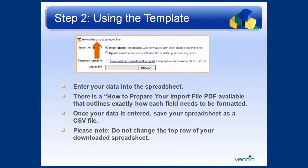The second step will be actually using the template. To use the template, edit your data into the spreadsheet. There's a How to Prepare Your Import File PDF available that outlines exactly how each field needs to be formatted. Once your data is entered, save your spreadsheet as a CSV file. Please note, do not change the top row of your downloaded spreadsheet.